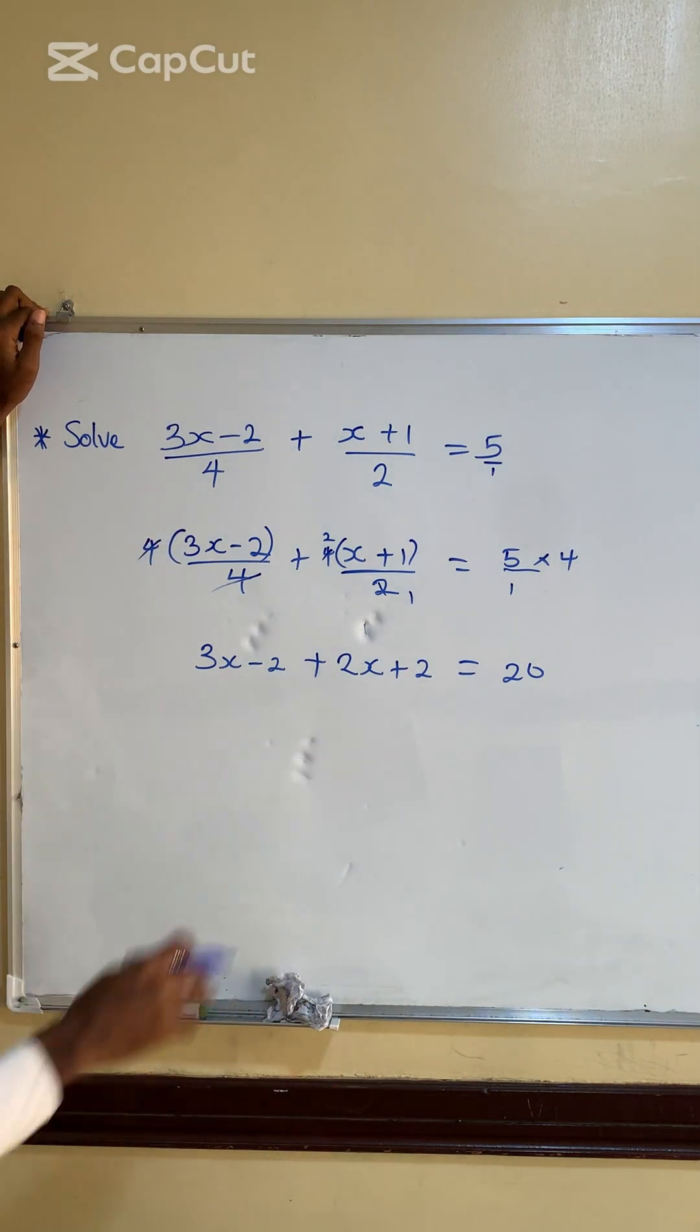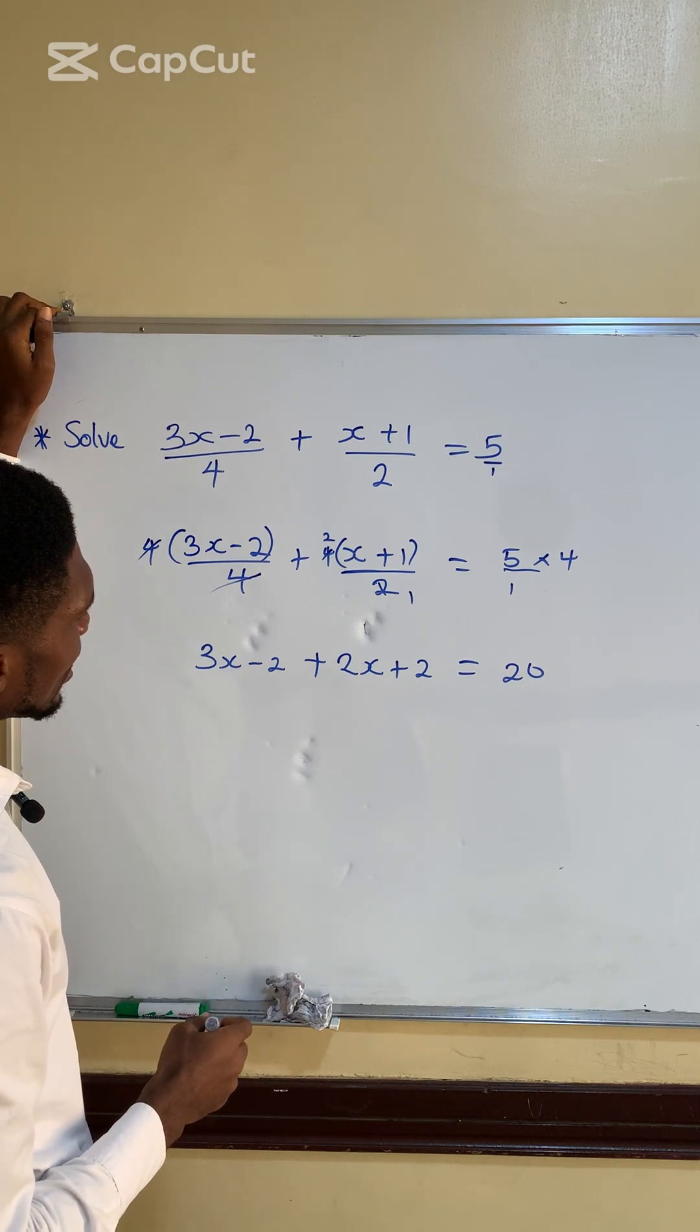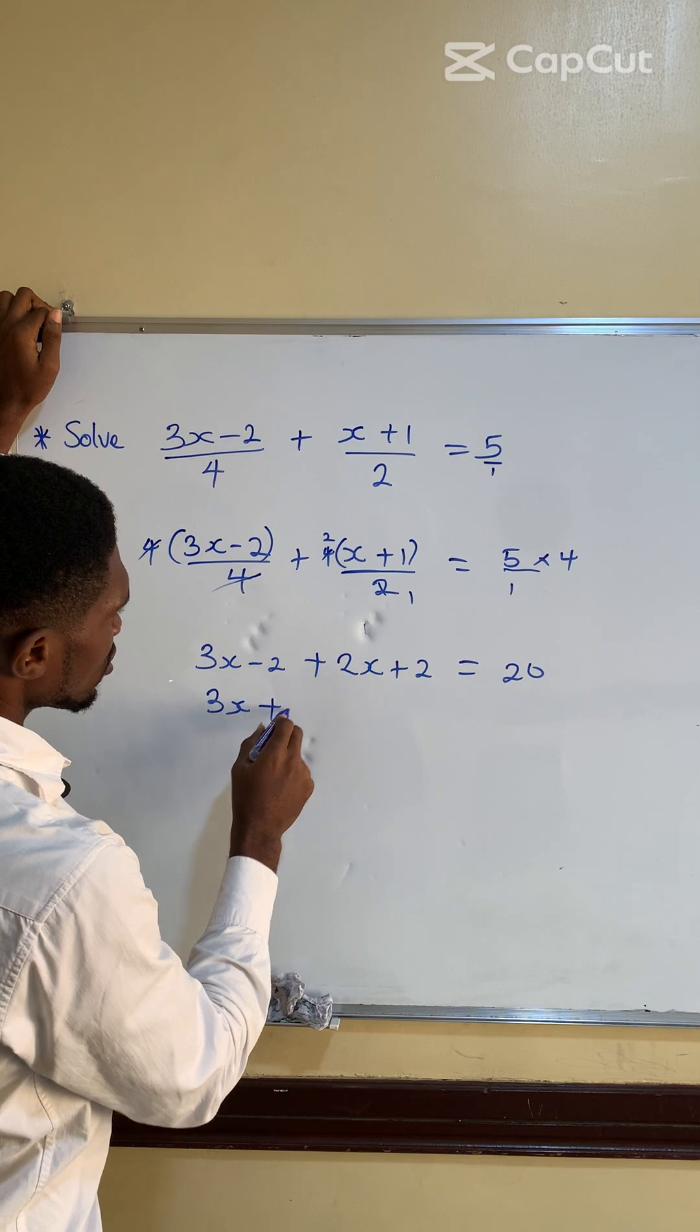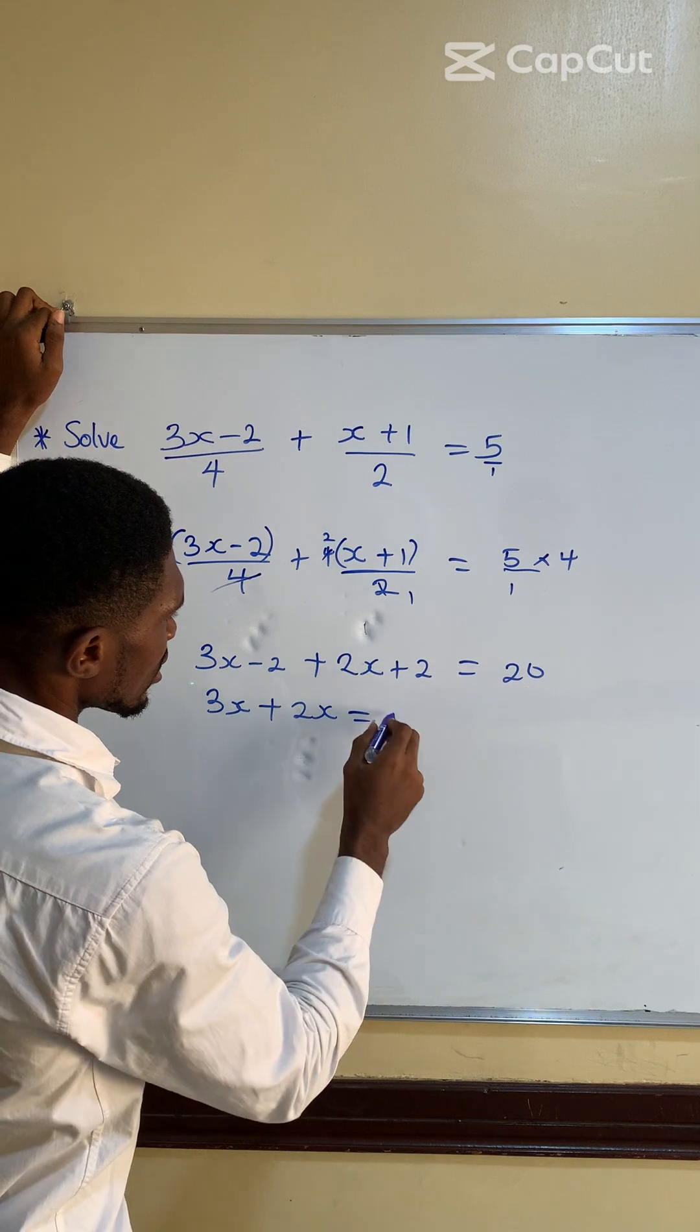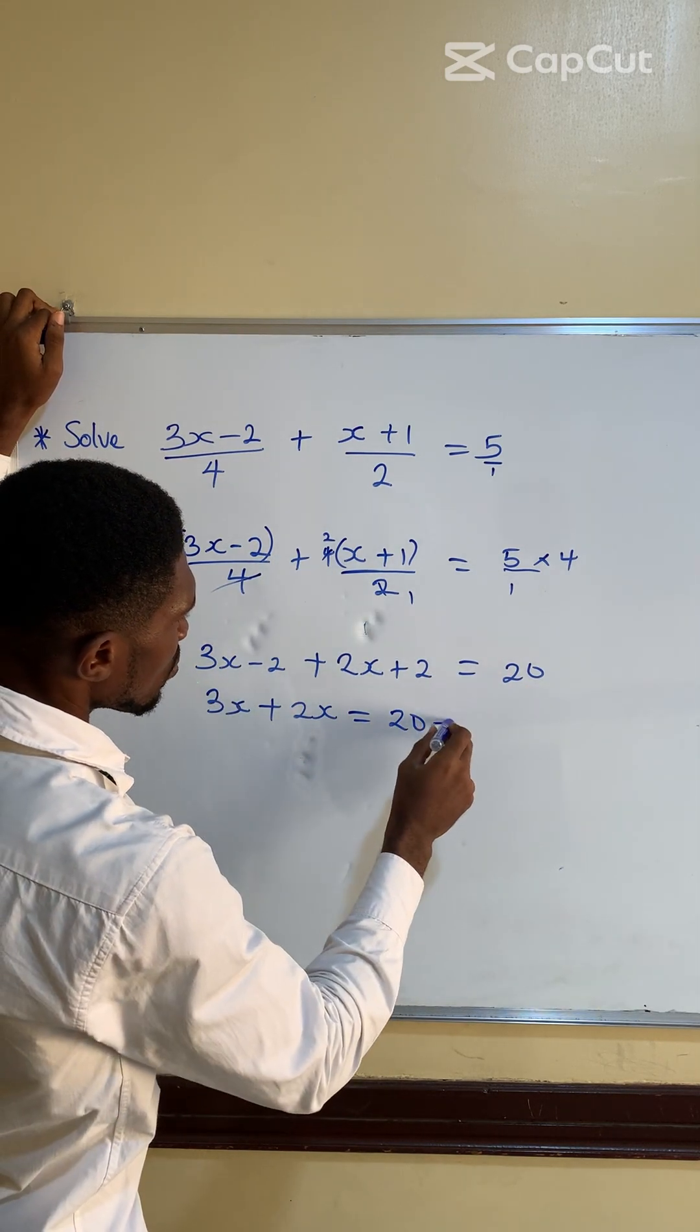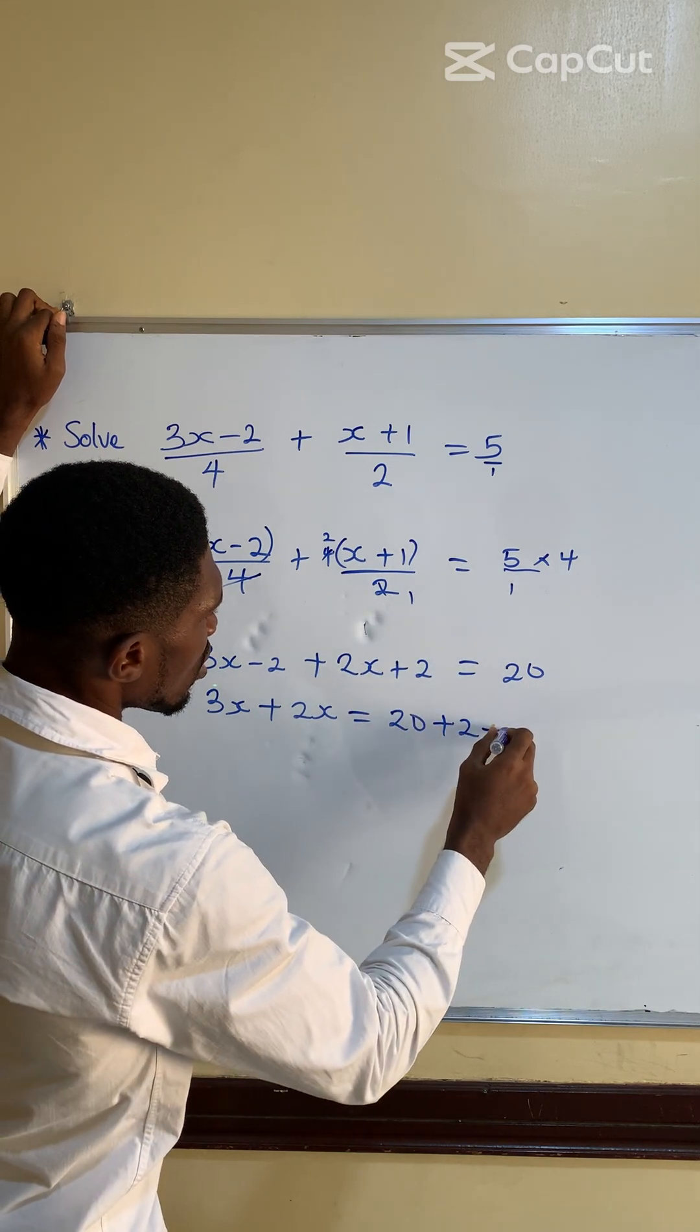But since we don't need fraction anymore, we'll leave it this way. So the next thing we'll do is collect like terms. We'll have 3x plus 2x, is equal to 20. This minus causes the change towards plus 2, and this causes the change towards minus 2.